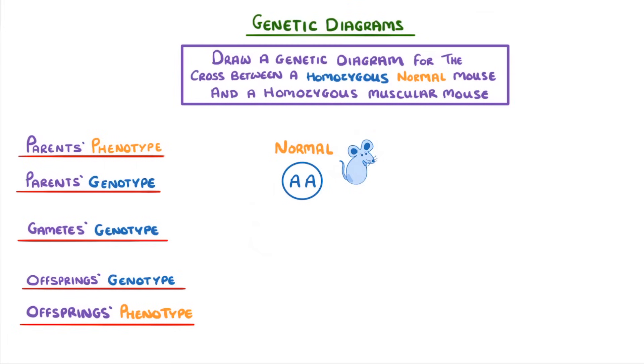Meanwhile the other parent is homozygous for the muscular allele, so its genotype will be two lowercase A's, and even though this allele is recessive, it will still be expressed because it's homozygous so the phenotype is muscular.